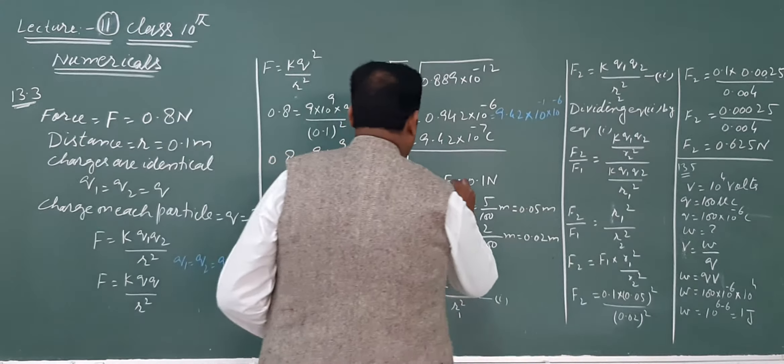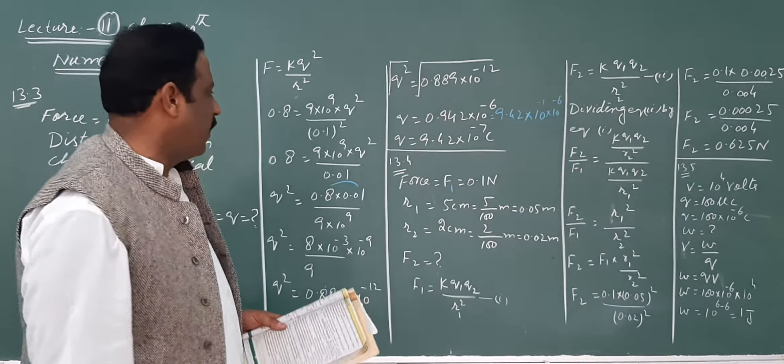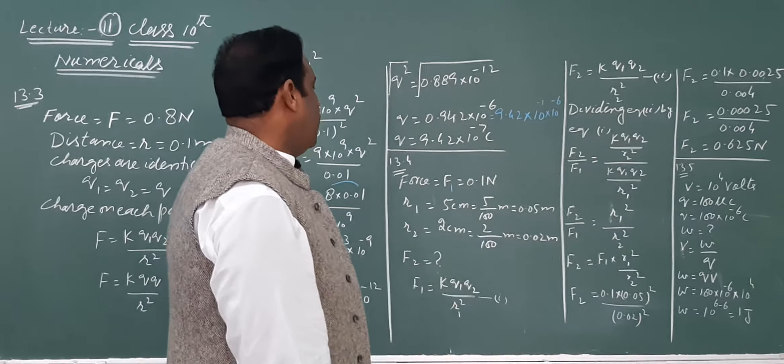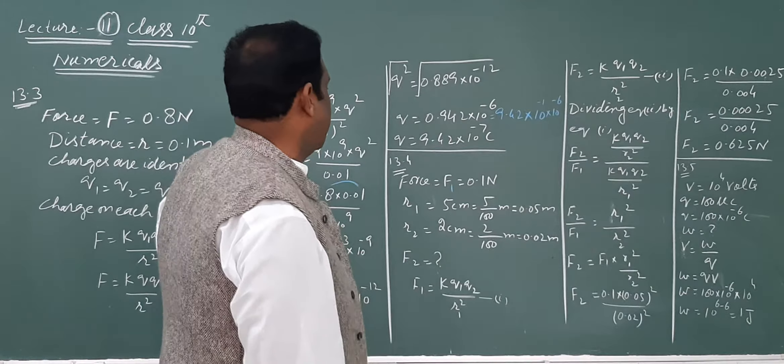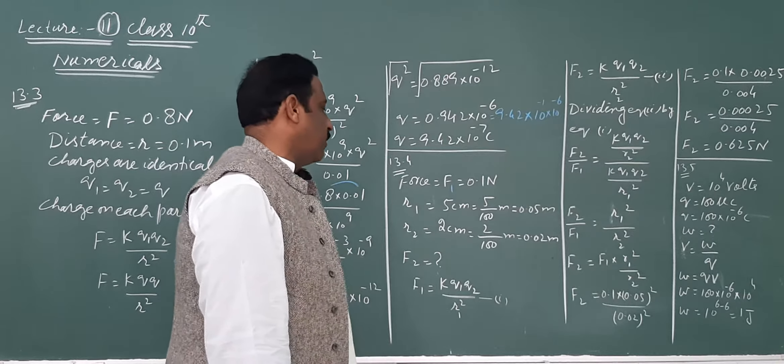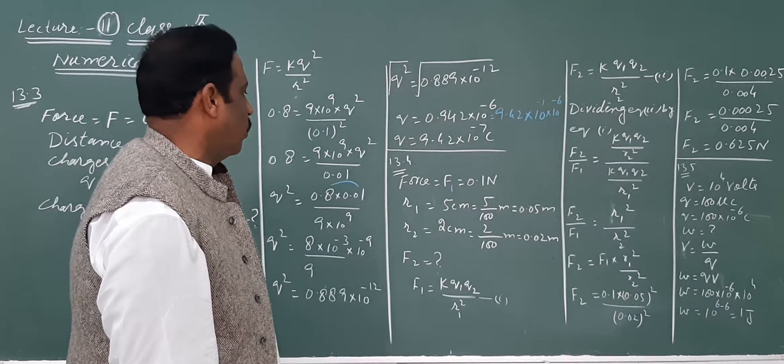Now numerical 13.4. The statement says: the force of repulsion between two point charges is 0.1 newton and they are 5 centimeter apart. Find the force between the same charges when they are 2 centimeter apart.